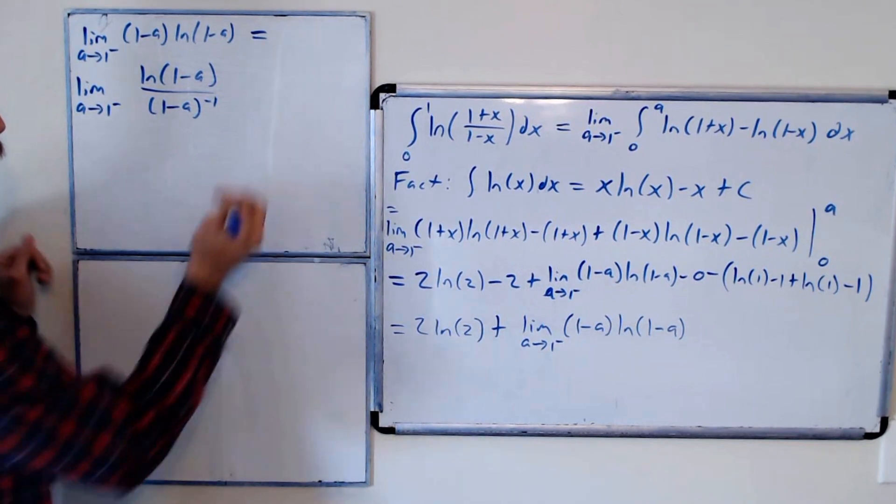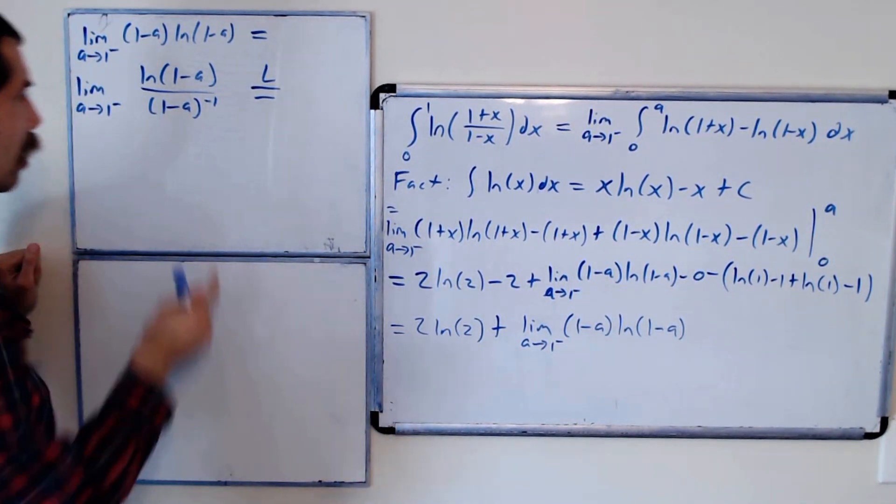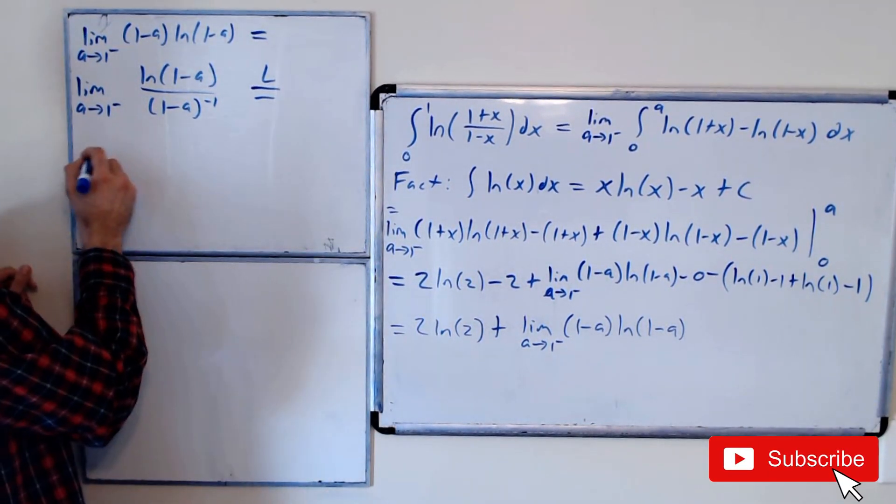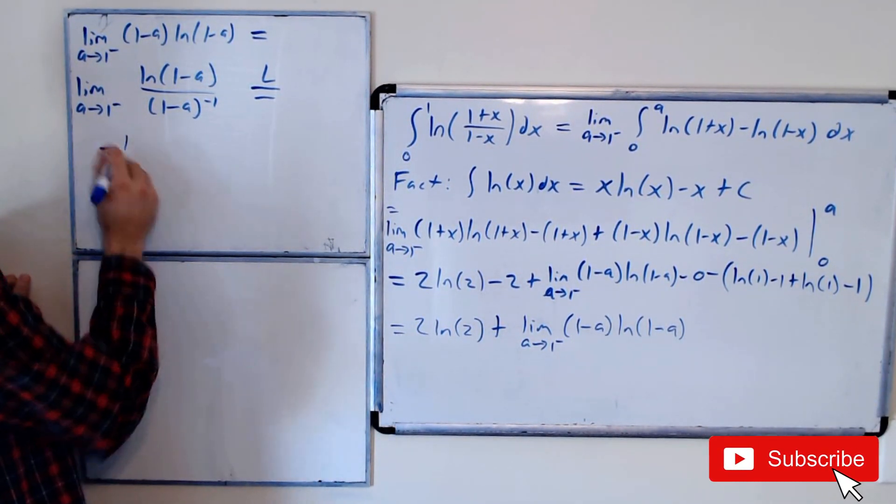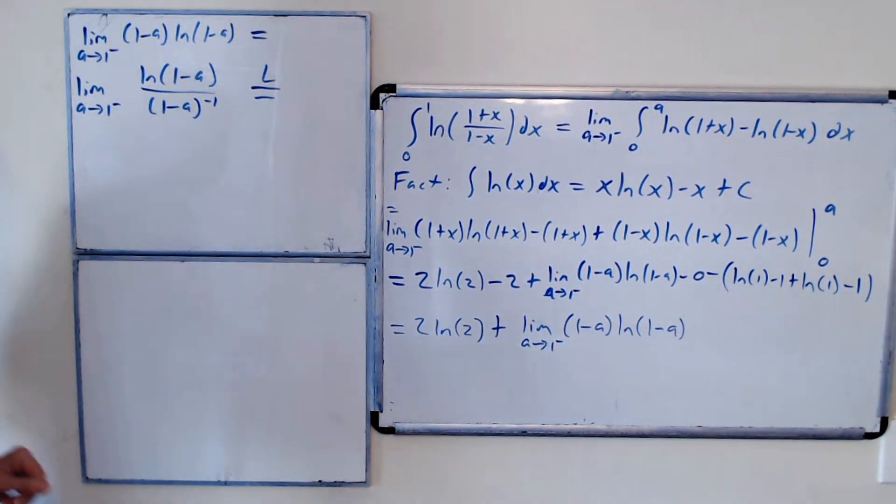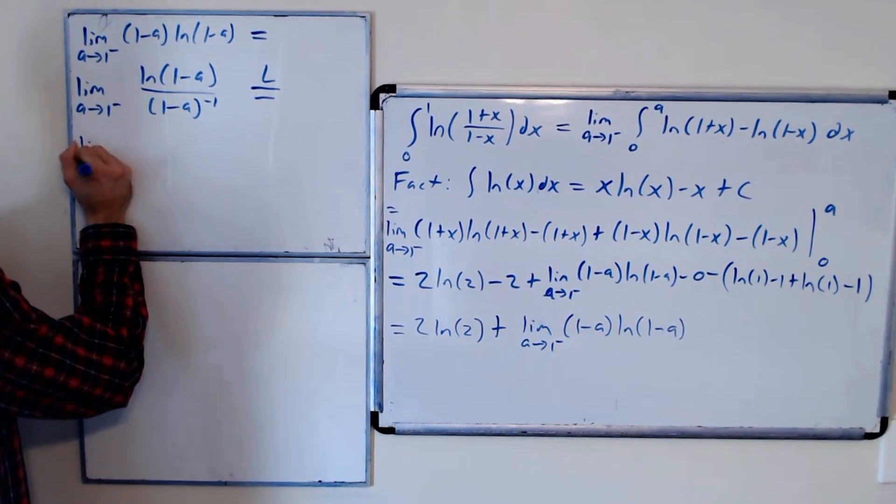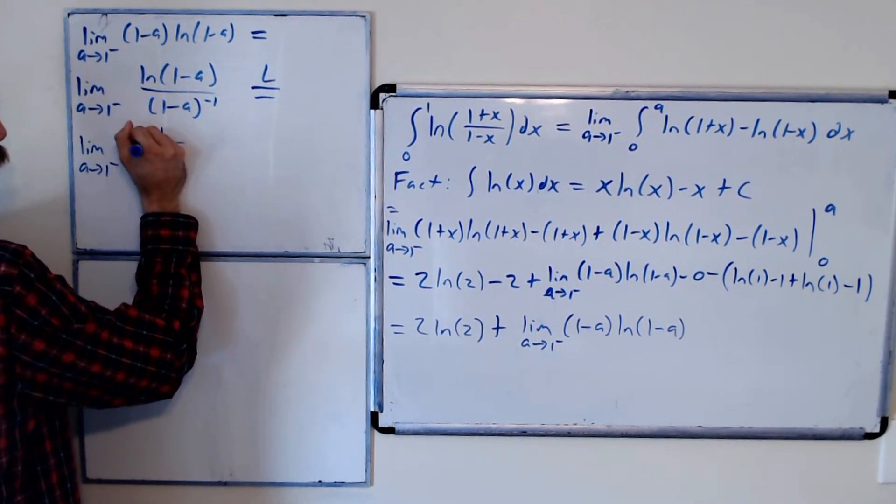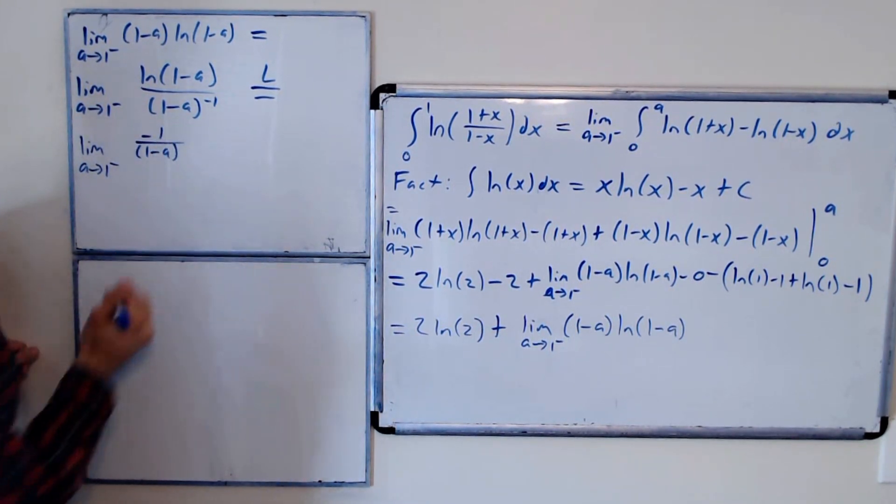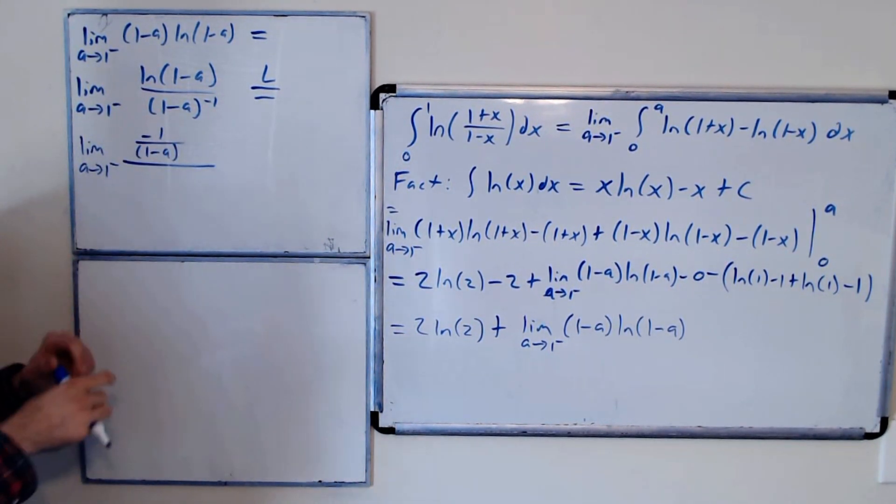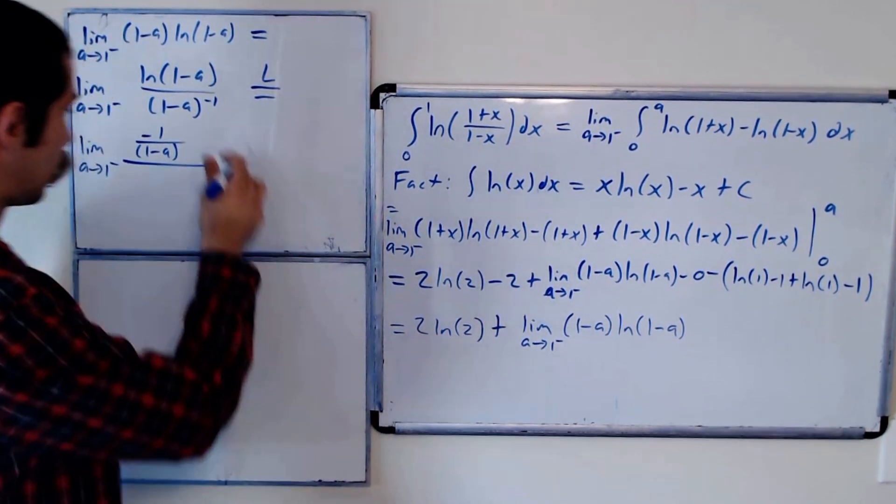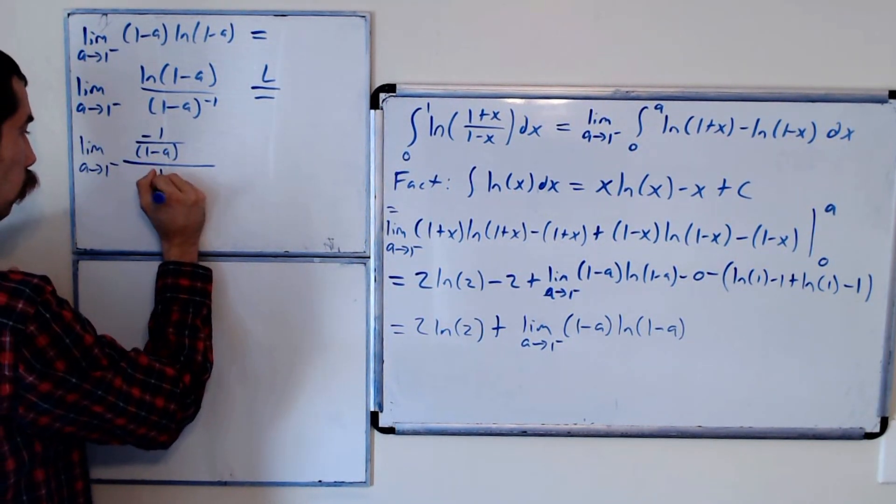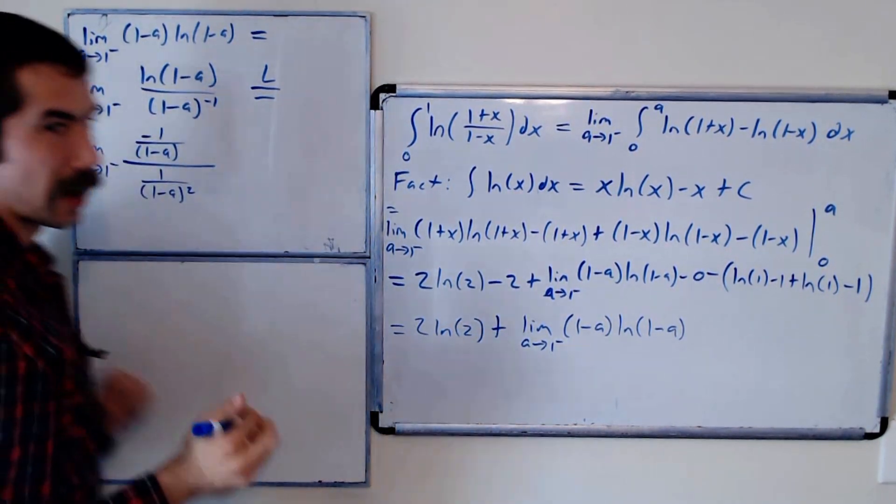And now we could use L'Hopital's rule. So equals by L'Hopital's rule, the derivative of ln of 1 minus a, with respect to a, is negative 1 over, this is still the limit, negative 1 over 1 minus a. And the derivative of 1 minus a to the negative 1 is negative, and when we do the chain rule, another negative, so positive 1 over 1 minus a squared.